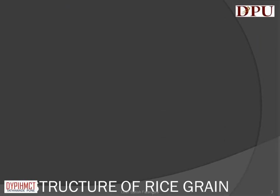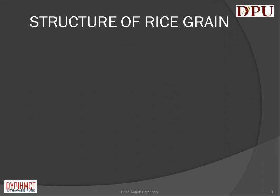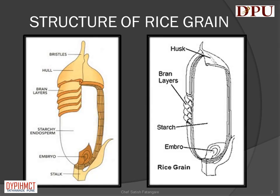In this slide we will discuss about the structure of rice grain. The different parts of rice grain are: bristles, hull, bran layers, starchy endosperm, embryo, and stalk.